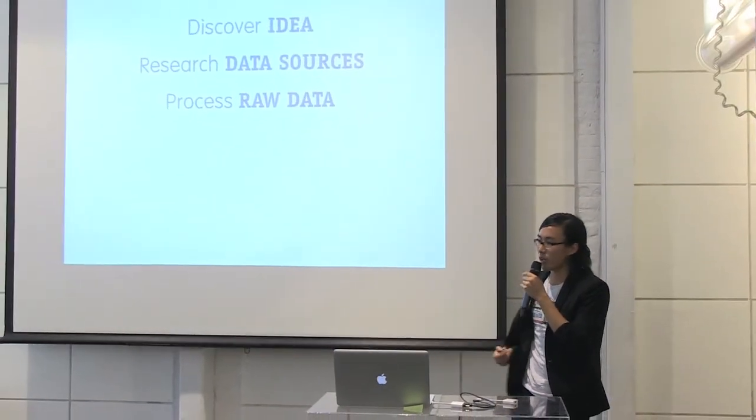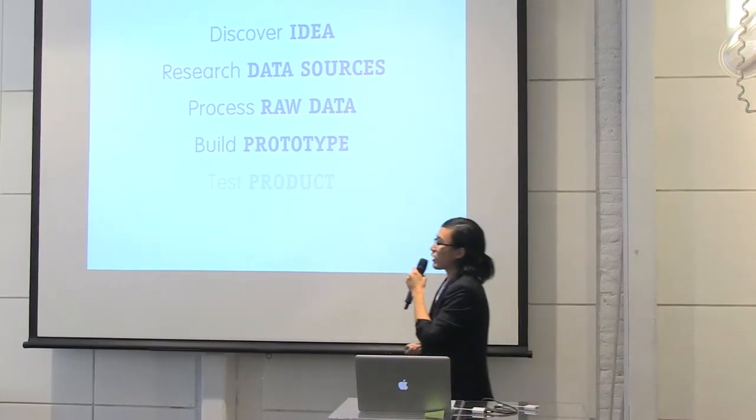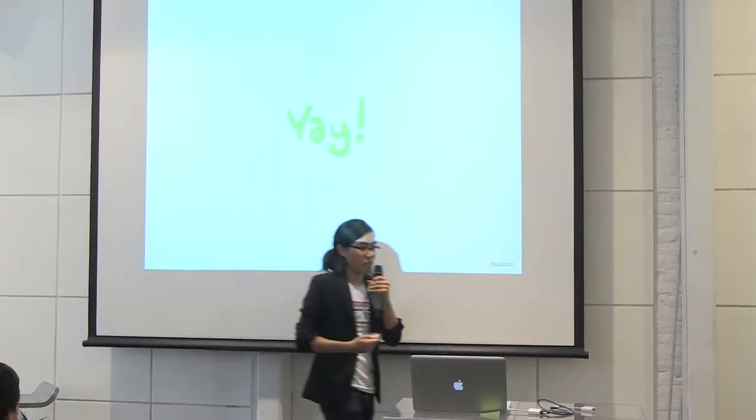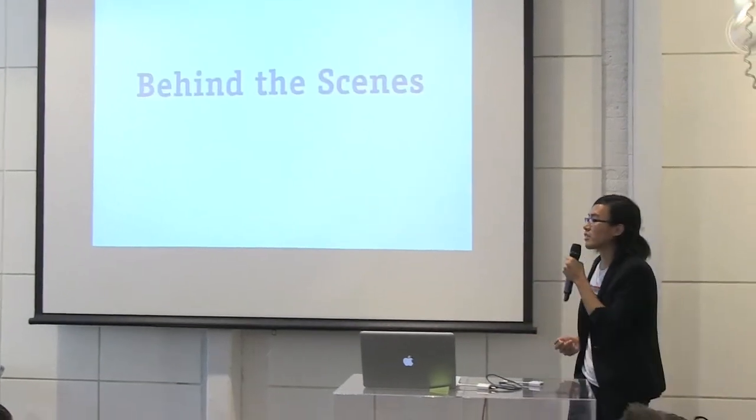The process started with the research question — how well does a transit system serve different populations? Then we looked into data sources. My partner Sandra Lee helped a lot with that, as she has a background in city planning and knowledge of relevant data sources. We then processed the raw data to present everything in a consistent manner, built prototypes, and tested before submitting. That sounds like a pretty straightforward process, but behind the scenes there was a lot going on.